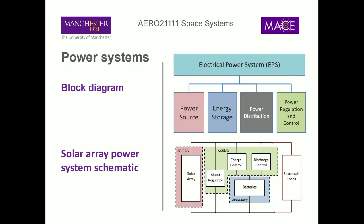For solar arrays, energy storage is particularly important because if we enter the eclipse region, suddenly we've got no power from the solar array, and the battery becomes our primary power source — charged up during the time we're in sunlight. This is especially critical for low-Earth orbits where you're in eclipse for potentially quite a large period of the orbit. Shutting down all the systems on board a satellite just going through eclipse is not viable.